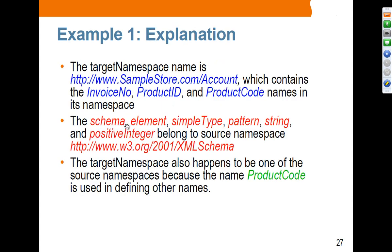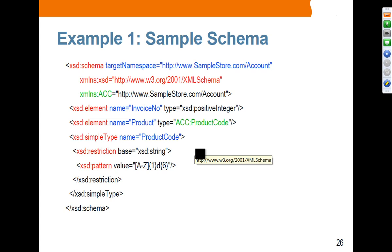Schema, element, simple type, pattern, string, and positive integer — these red-colored things — belong to the source namespace. XML schema itself is an XML document, so it has to follow the same rules. It does define the source namespace or external namespace. Anything that belongs to the XML schema namespace has to be prefixed with XSD. So element, simple type, restriction, and pattern all belong to this XML schema namespace — this is an example of a source namespace.